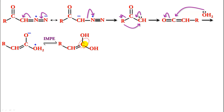This geminal diol undergoes tautomerism, and the tautomerism results in the higher homolog of the carboxylic acid.